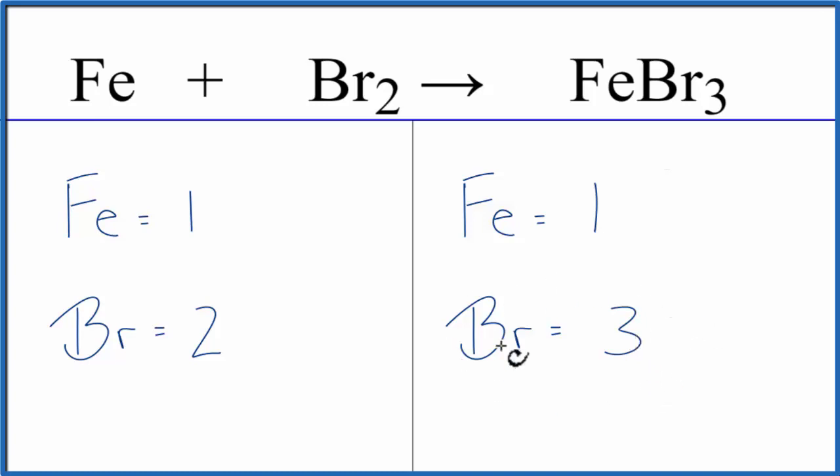Whenever I have an odd number like this, I like to get it to an even number. That makes it easier to balance. So let's put a 2 in front of the iron 3-bromide.